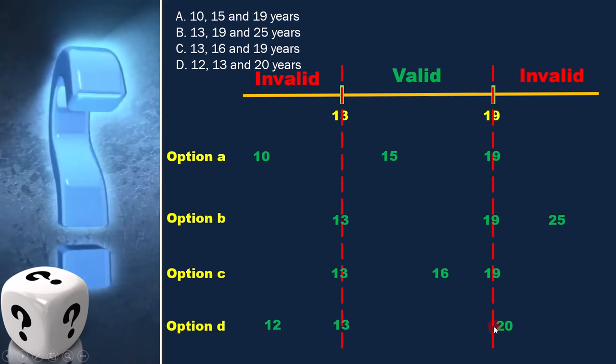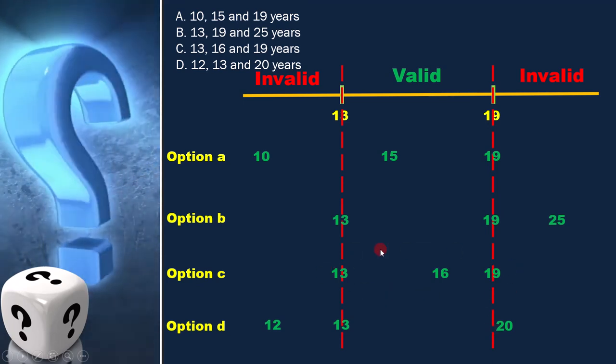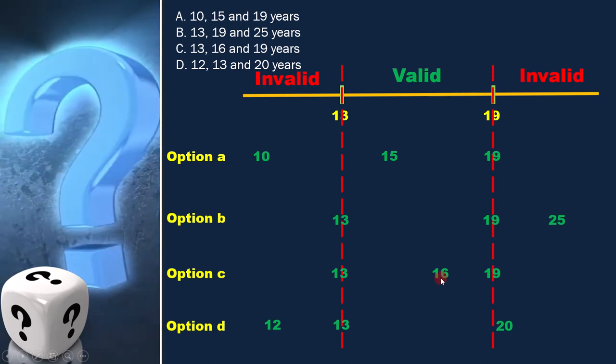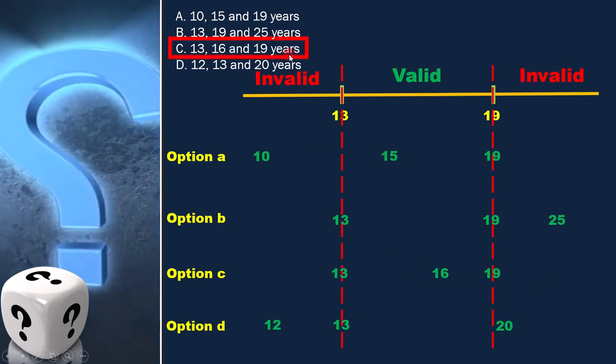It is clear that in option C, all the values are in the same equivalence class. Therefore, option C is the correct answer.